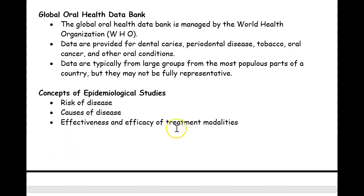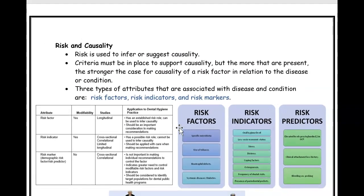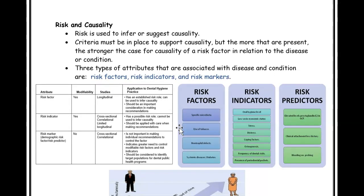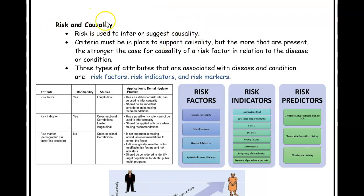Risk and causality are terms epidemiologists use. The important thing is that a risk factor means it causes something — for example, tobacco use causes periodontal disease, and uncontrolled diabetes causes periodontal disease. So risk factors suggest cause, or suggest causality. There are different types of risk: risk factors, risk indicators, and risk predictors, also known as risk markers.